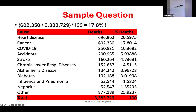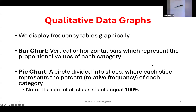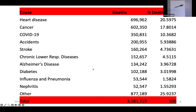Similar to relative frequencies, our percent frequencies should add up to 100 — 100% of the data. We've answered that it's 17.8%. Some other types of graphs we can do are bar charts and pie charts in Excel. I'll show you examples, and at the very end show you how to actually create them in Excel.